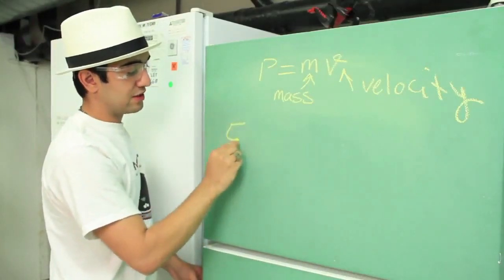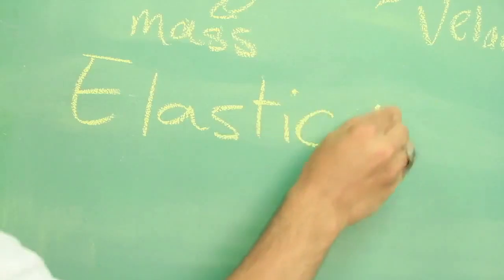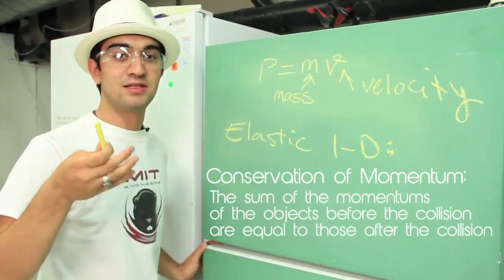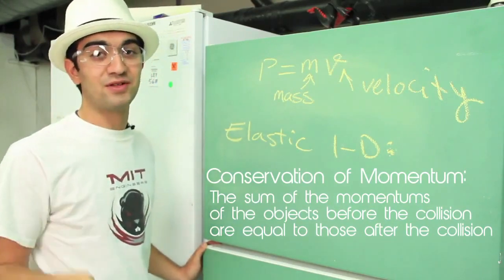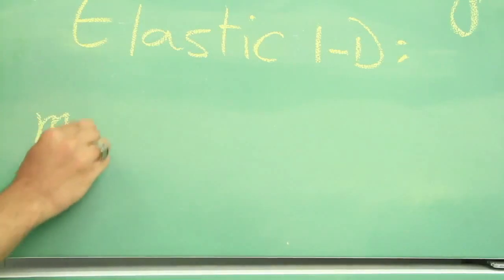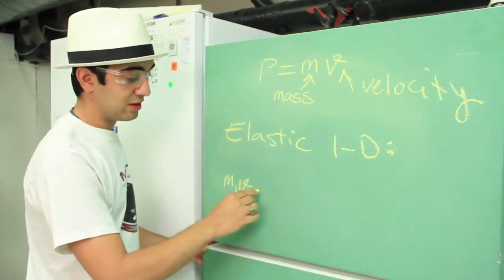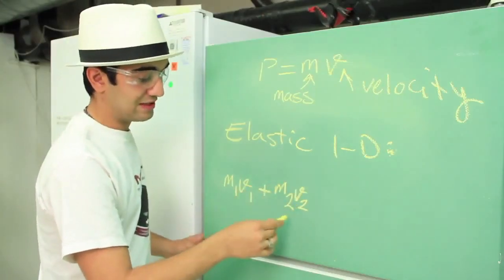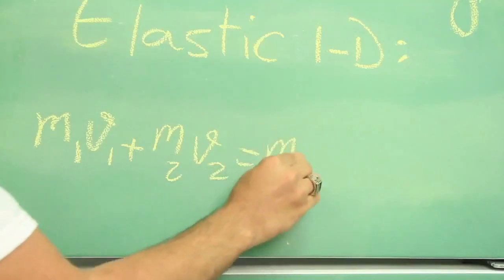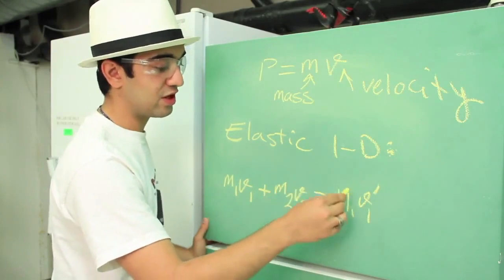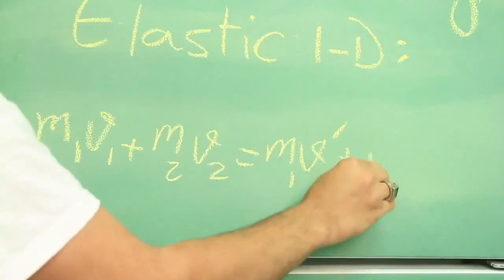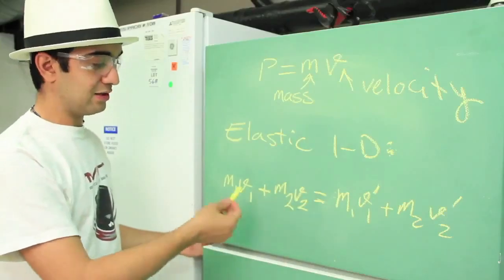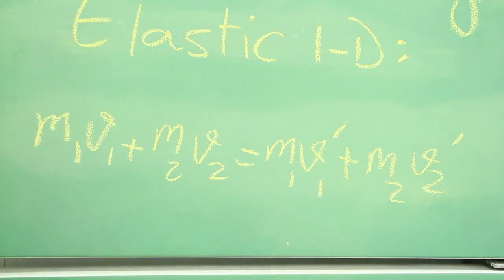For elastic collisions in one dimension, conservation of momentum applies. That means the sum of the momentums of the objects before the collision is the same as the sum of the momentums after the collision. We can write that as m1v1, the momentum of the first object before the collision, plus m2v2, the momentum of the second object before the collision, is equal to m1v1 prime plus m2v2 prime — the momentums of the first and second objects after the collision. The sum of momentum before equals the sum after.